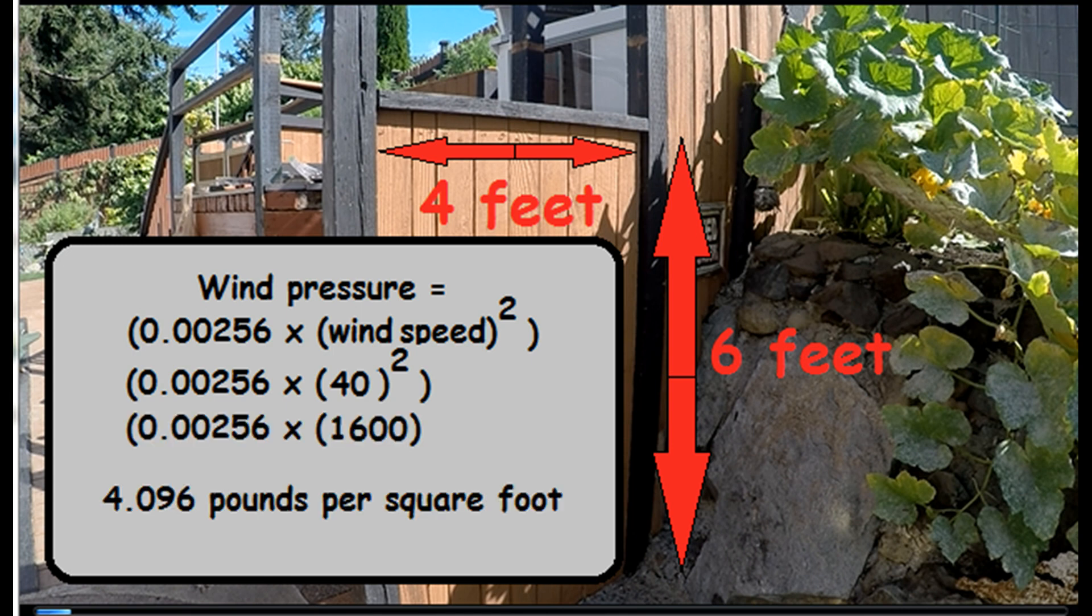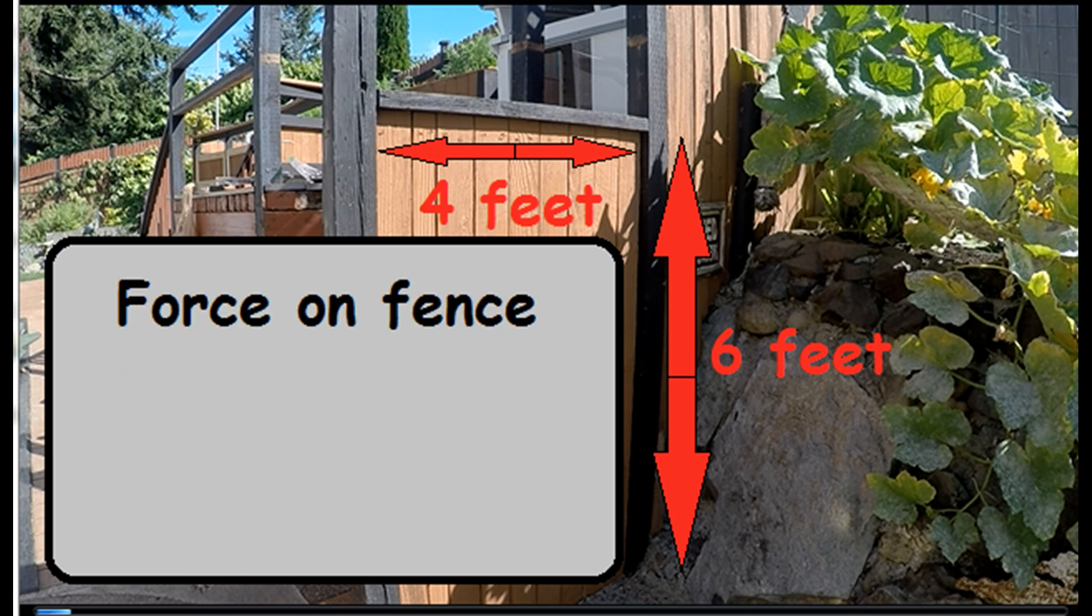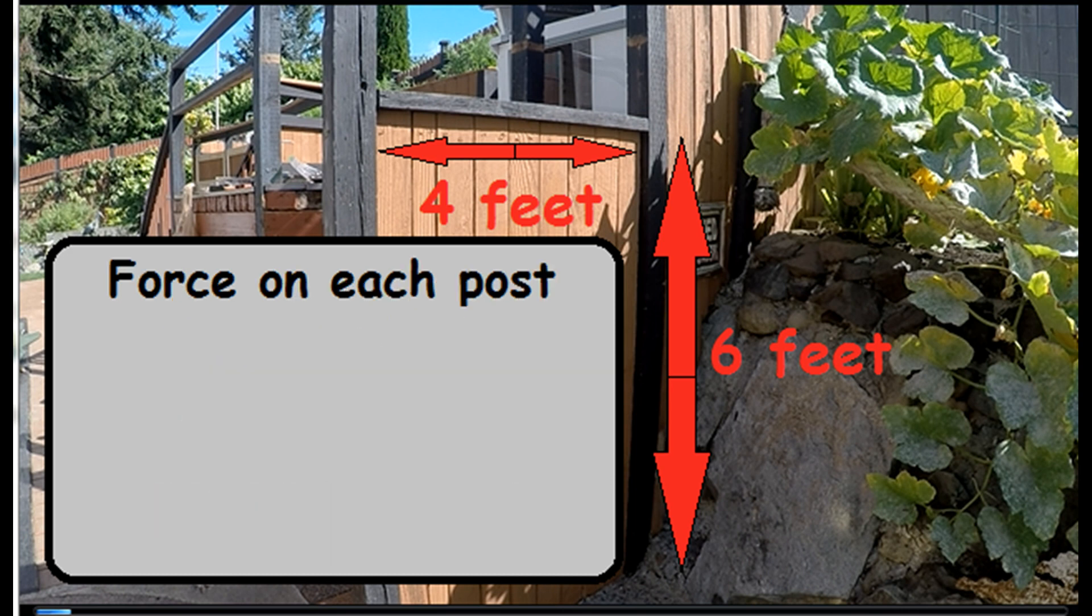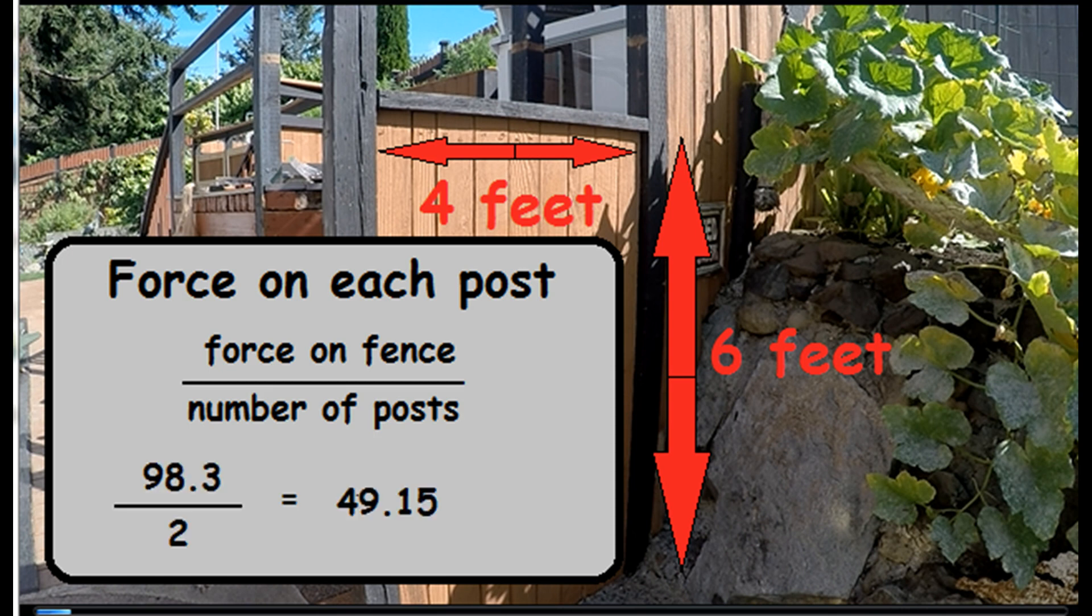Now, by itself, that doesn't sound like a lot, but that's only one square foot. To measure the total wind force on the fence, multiply by the total area of the fence. So we're looking at slightly under 100 pounds. To find out how much of that force is transferred to each post, divide it by the number of fence posts you have. Finally, we get about 50 pounds of force on each post.